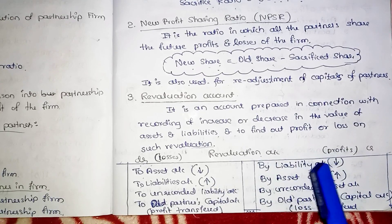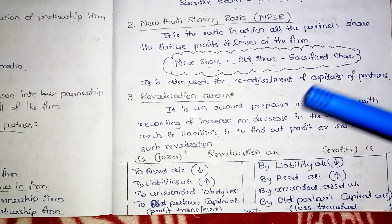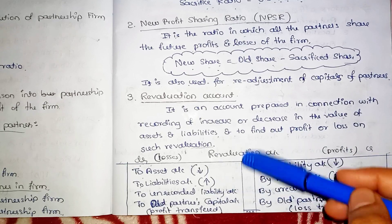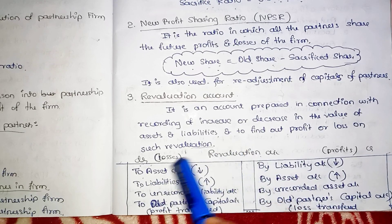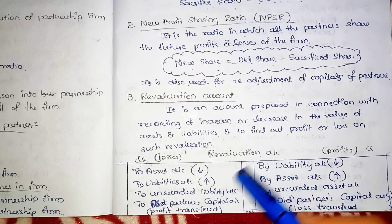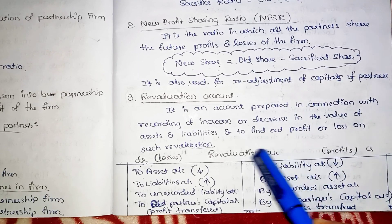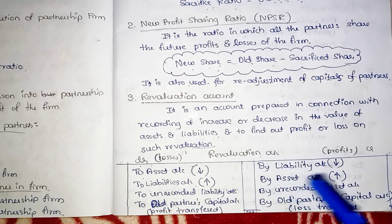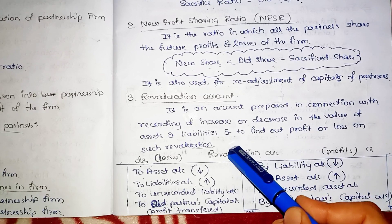For 12-mark problems, journal entries are made for admission, dissolution, death, or retirement. Asset decrease: Revaluation Account Debit to Asset Account. Liability increase: Revaluation Account Debit to Liability Account. Unrecorded liability: Revaluation Account Debit to Unrecorded Liability Account. Profit transfer: Revaluation Account Debit to Old Partners' Capital Account. Liability decrease: Liability Account Debit to Revaluation Account. Asset increase: Asset Account Debit to Revaluation Account. Unrecorded assets: Unrecorded Assets Account Debit to Revaluation Account. Loss transfer: Old Partners' Capital Account Debit to Revaluation Account.